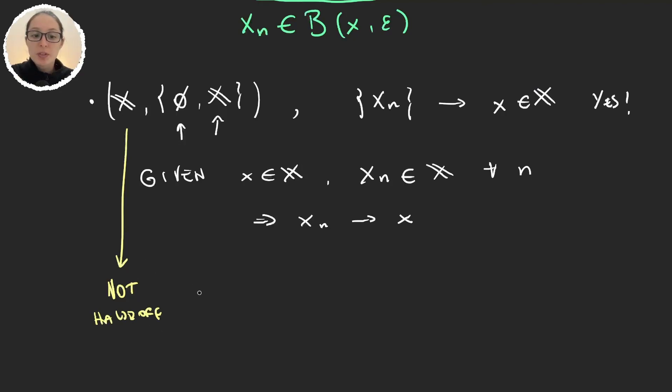And again the reason is very trivial. If we take two elements in the set then the only possible neighborhood we can take is the whole set and obviously it's not disjoint with itself. So it's trivially not Hausdorff.